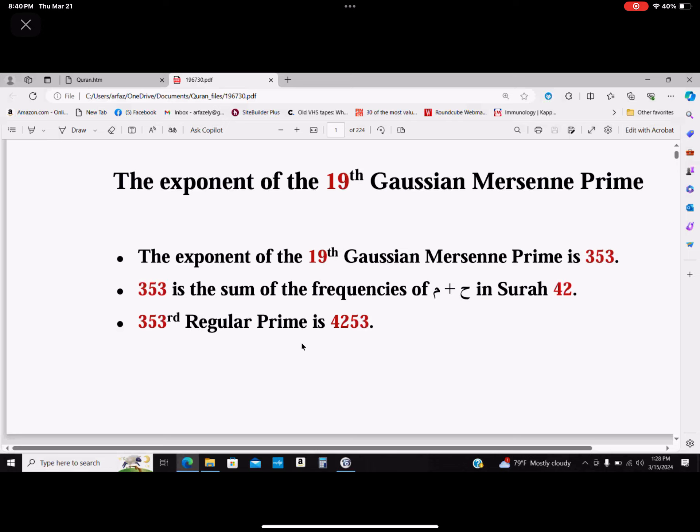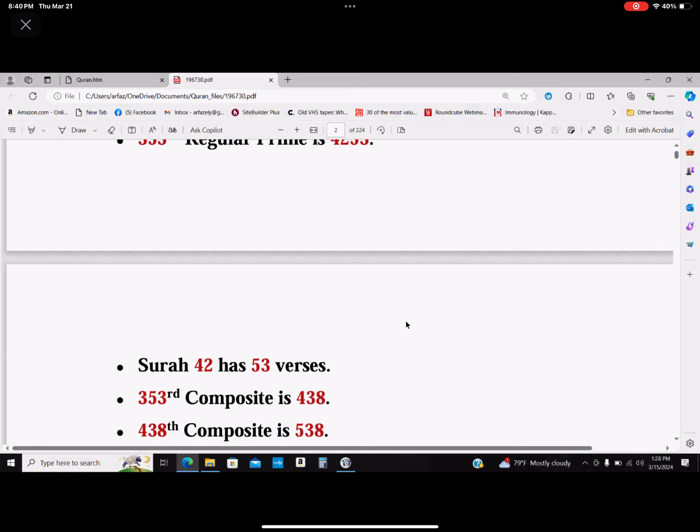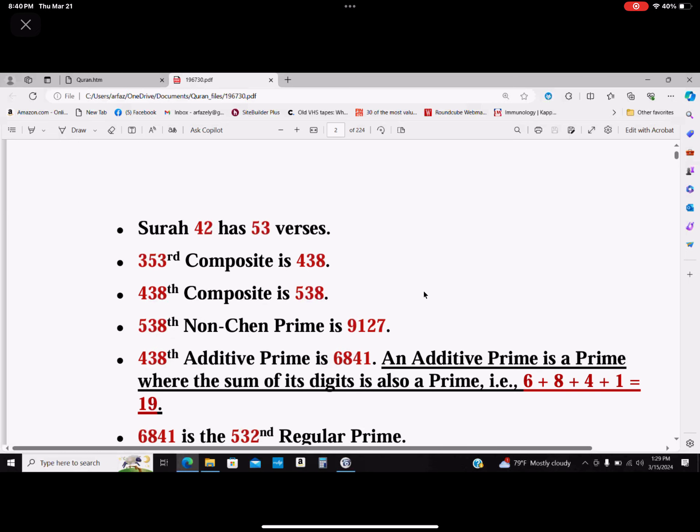353 is the sum of the frequencies of ha plus meem in Surah 42. The 353rd regular prime is 4253. Chapter 42 has 53 verses. The 353rd composite is 438. The 438th composite is 538.